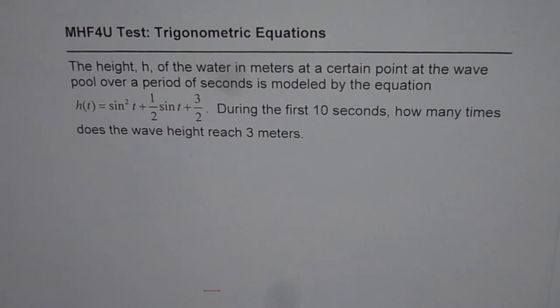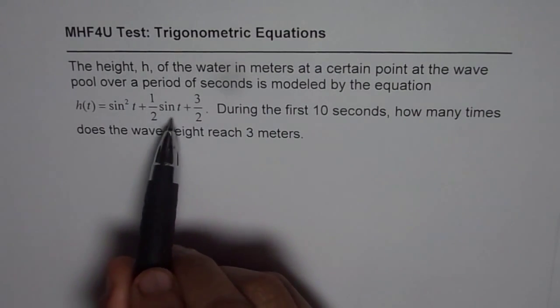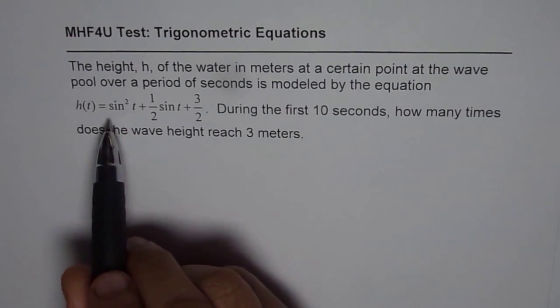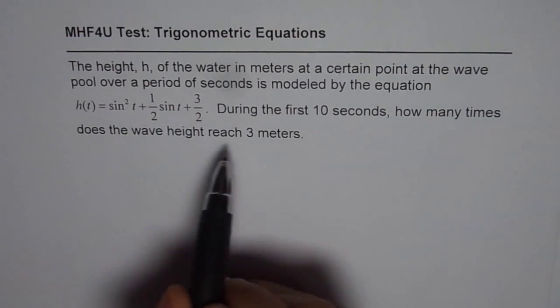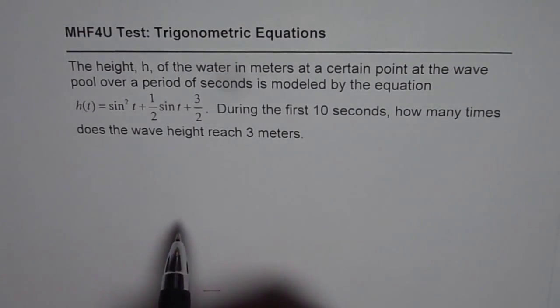So what we have is height of the wave as a quadratic function of sin t. So we can actually use quadratic formula and find the value of this function when it is 3. So let's equate 3 for height and solve using quadratic formula.